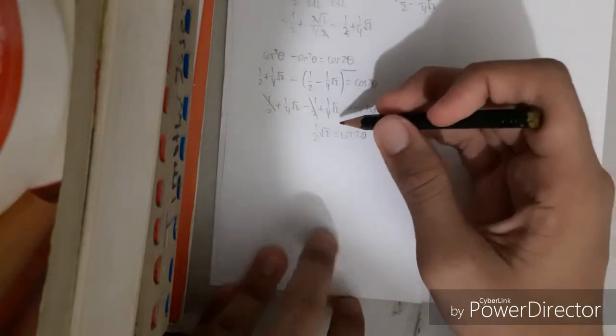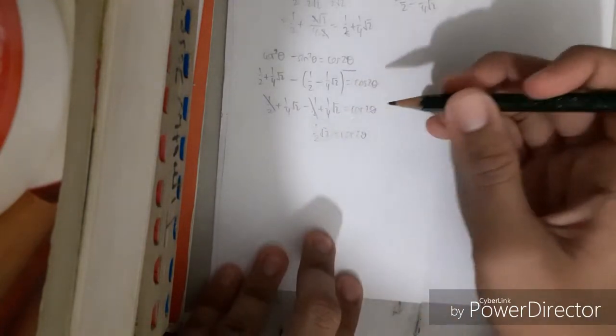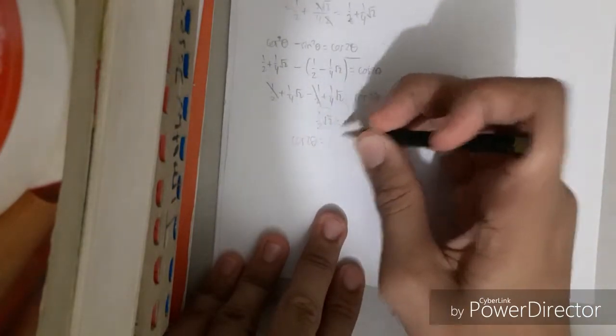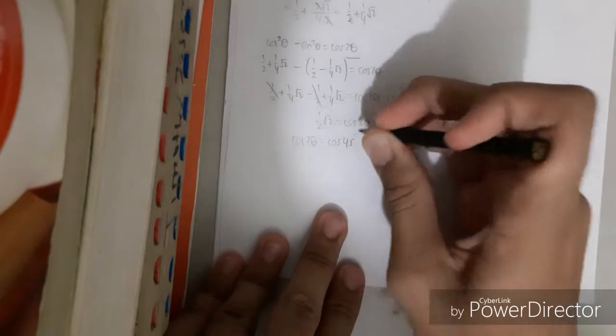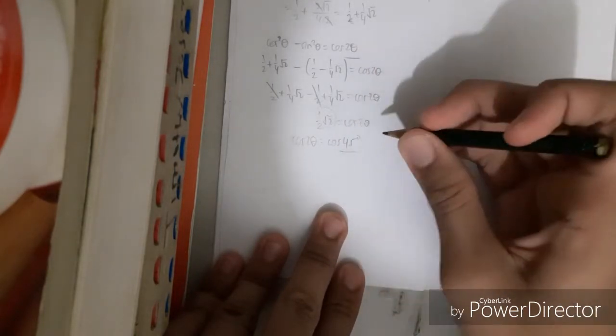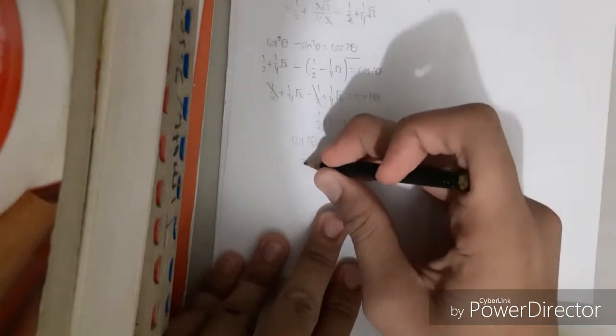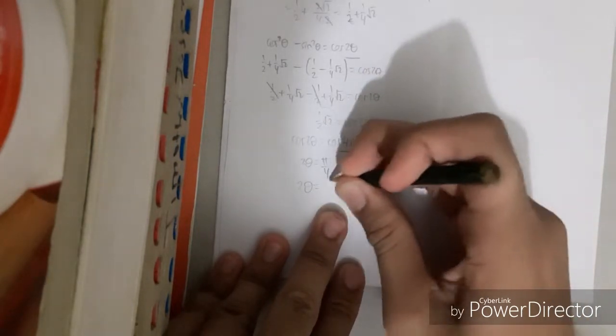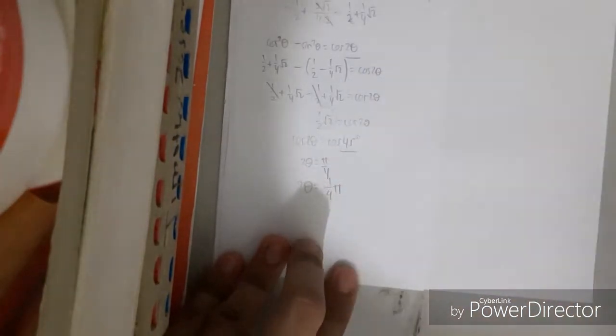What degree has cosine 1 over 2 root 2? Yes, it's 45 degrees. We can change it into radians, so 2 theta equals pi over 4, so the answer is 1 fourth pi.